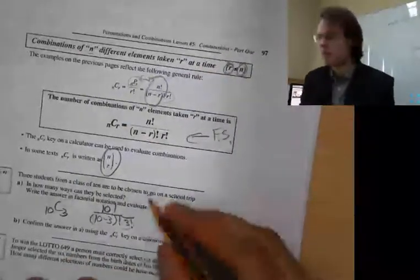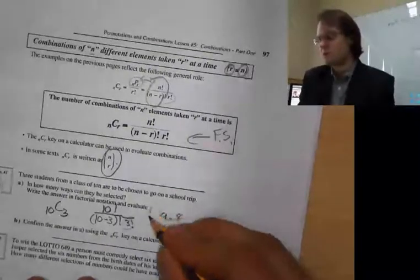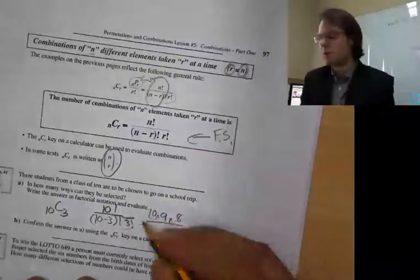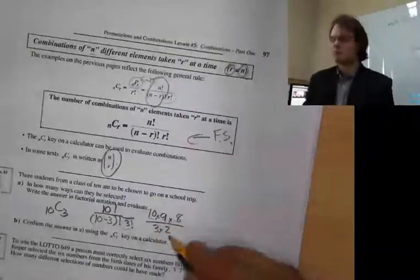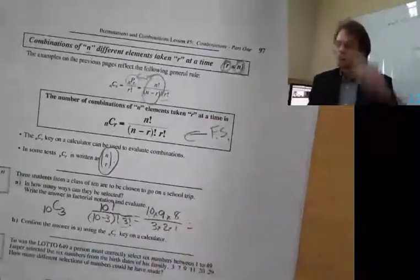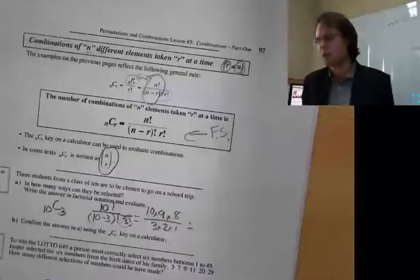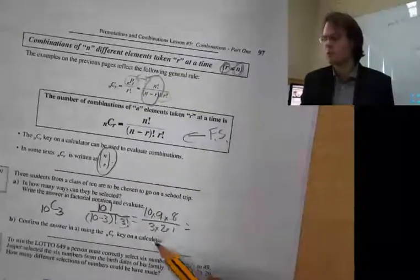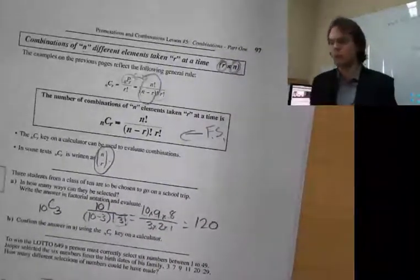Simplifying this: ten multiplied by nine multiplied by eight, all over three times two times one. Two times nine is 90 — no wait — divide by three gives 30, then times four gives 120. So we get 120.